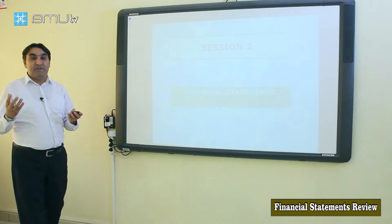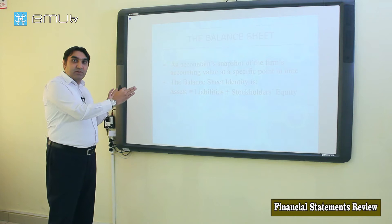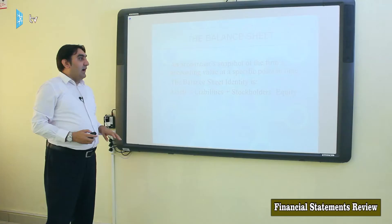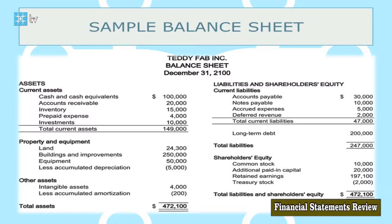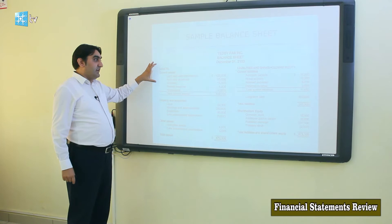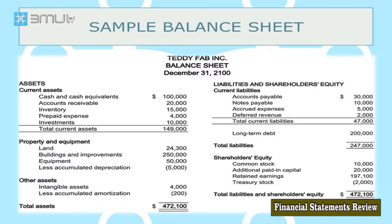The balance sheet is a snapshot of a company's accounting value at a point in time. That point is usually end of year — it shows us what this company has by that time. The asset side of the balance sheet is equal to the liability and equity side, which is why we call it balanced. The balance sheet starts with current assets, fixed assets, short-term liabilities, long-term liabilities, and equity. This T-shaped balance sheet is one form in which it is reported.